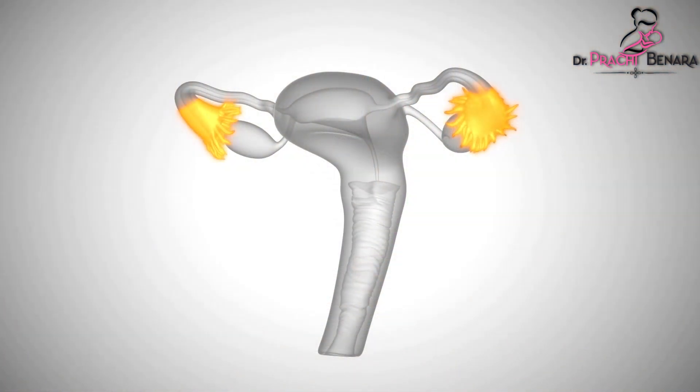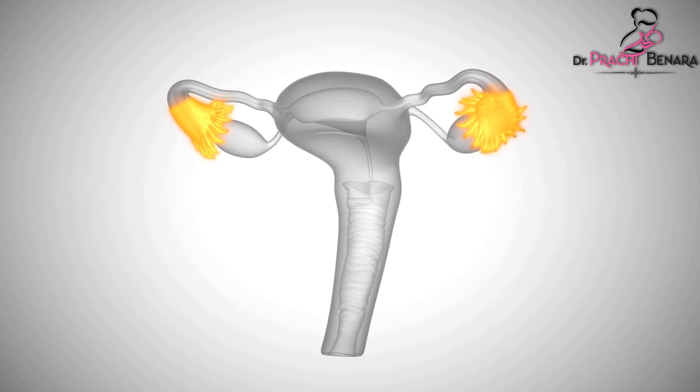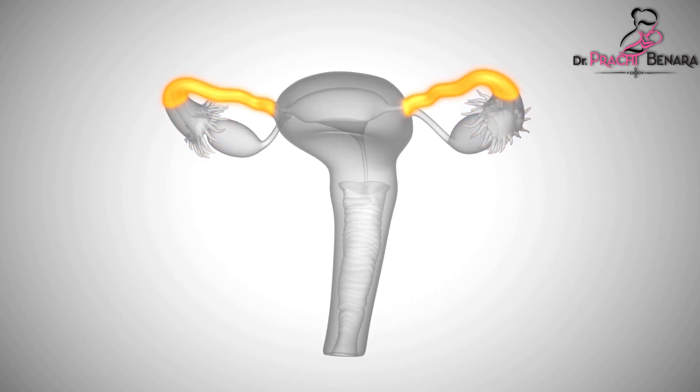सबसे पहले जानना है कि IVF की requirements कब होती हैं। Number one: blocked fallopian tubes. Fallopian tube is the area where egg and sperm fertilize. अगर किसी महिला की fallopian tubes blocked हैं, किसी previous surgery या infection की वजह से, तो उस lady को हम IVF की advice देते हैं।